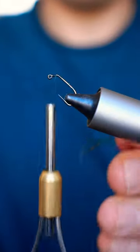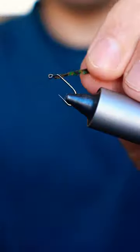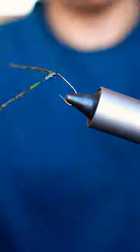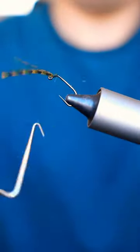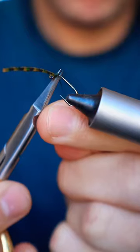Snip the excess and grab a strand of rubber legs. Wrap the legs around your thread and secure them just behind the eye, facing forwards. We'll do a quick two-turn whip finish and cut our thread free.